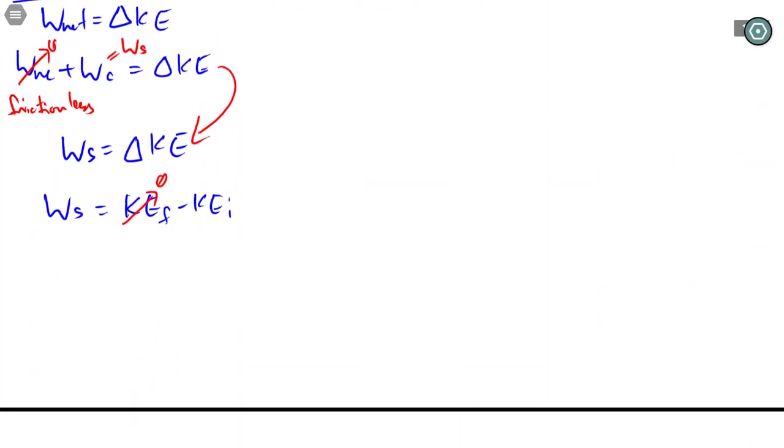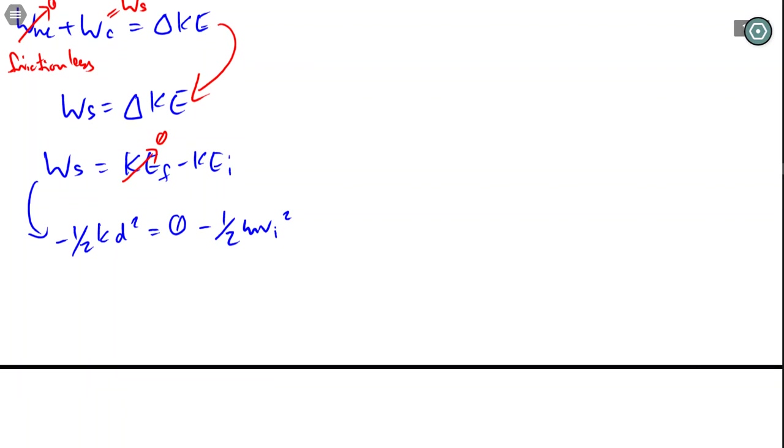Things are coming together. Our work done by the spring is negative one half k d squared. That's going to be zero minus, oh negative negative, that's initial. So that's cool. So I like to do all the algebra first because it simplifies quite nicely.